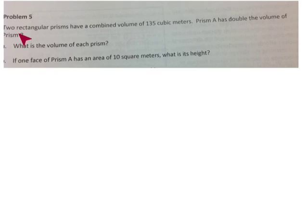This problem says two rectangular prisms have a combined volume of 135 cubic centimeters. Prism A has double the volume of prism B. A, what is the volume of each prism? B, if one face of prism A has an area of 10 square meters, what is its height?